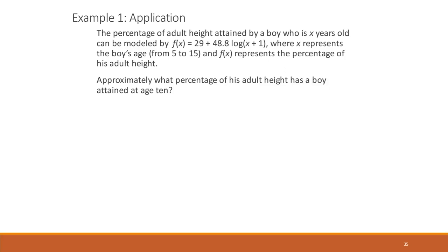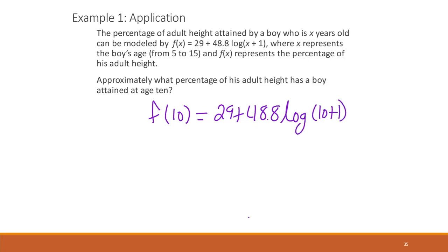Let's do a couple of applied problems to end section 4.2. The percentage of adult heights attained by a boy who is x years old is modeled by f(x) = 29 + 48.8 log(x + 1), where x is the boy's age from 5 to 15. At age 10: f(10) = 29 + 48.8 log(10 + 1), which is approximately 80 percent.